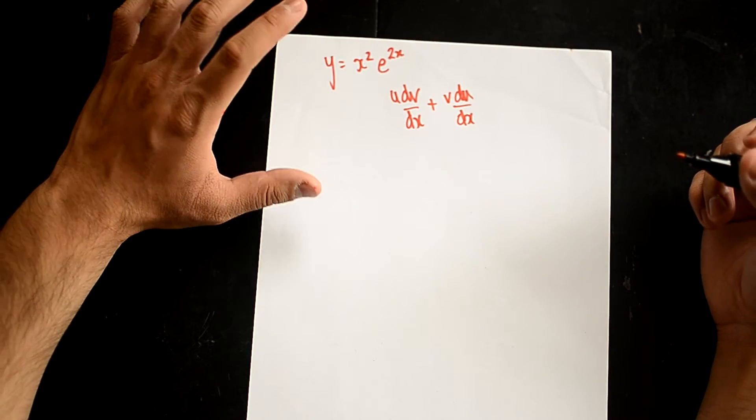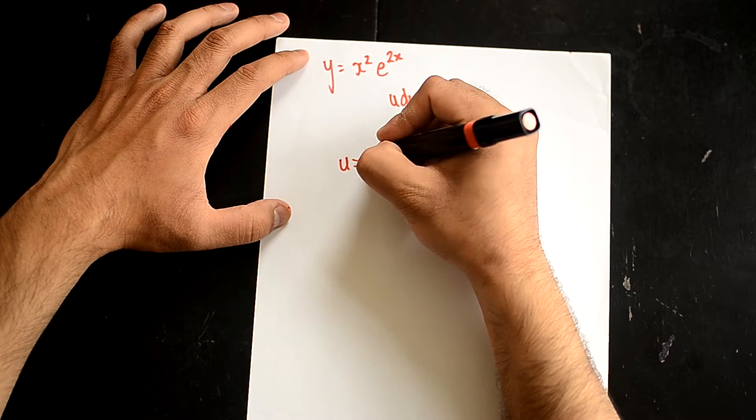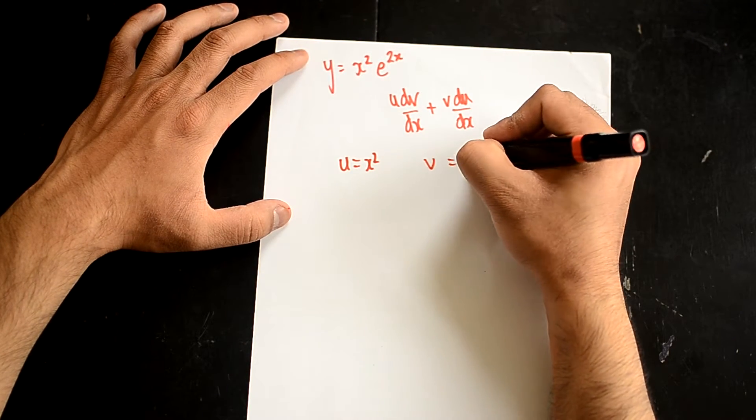I will now assign these all to something. So, my x squared will be the u term, so u will be x squared. And my v will be e to the 2x.